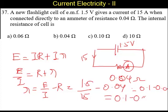0.1 minus 0.04, we are going to have 0.06 ohms.